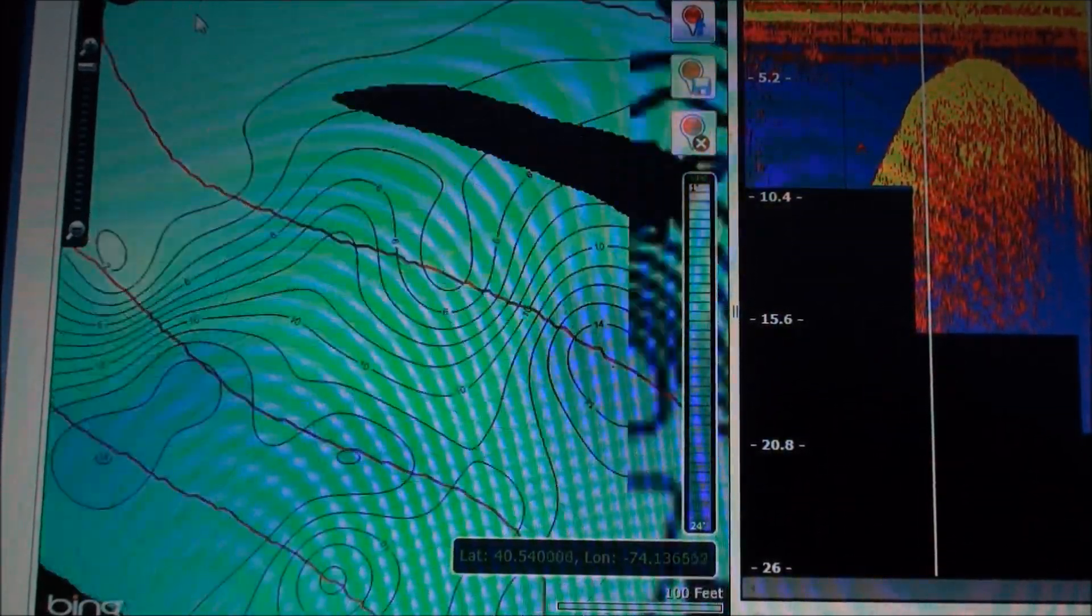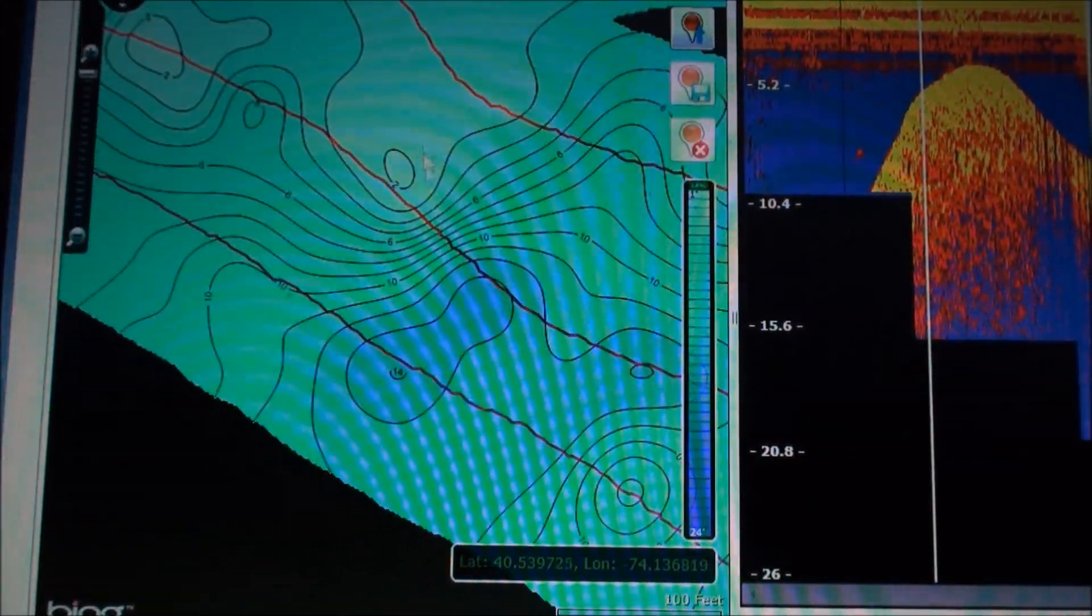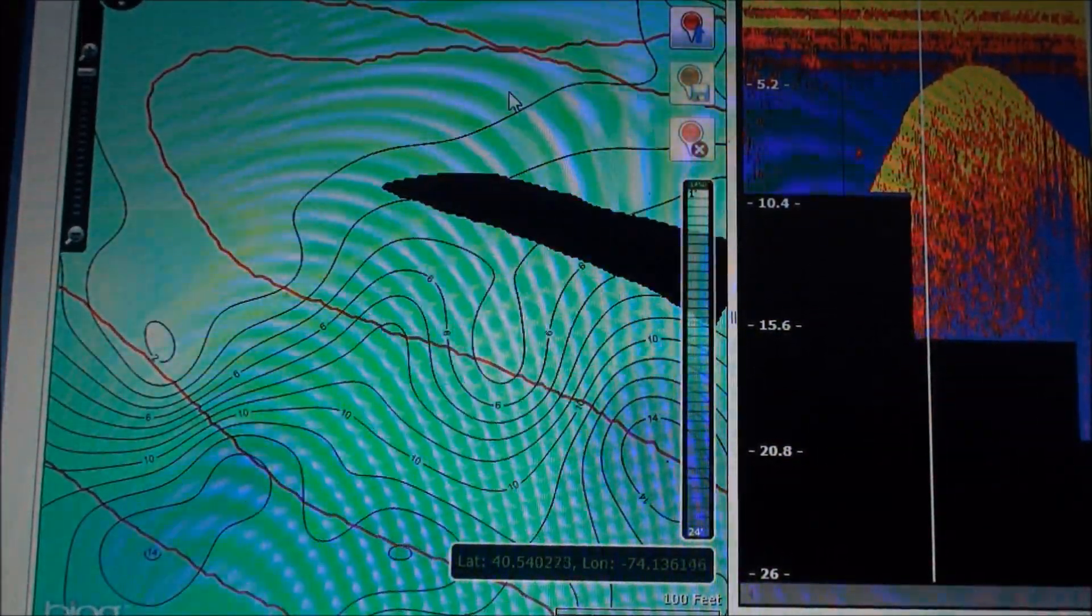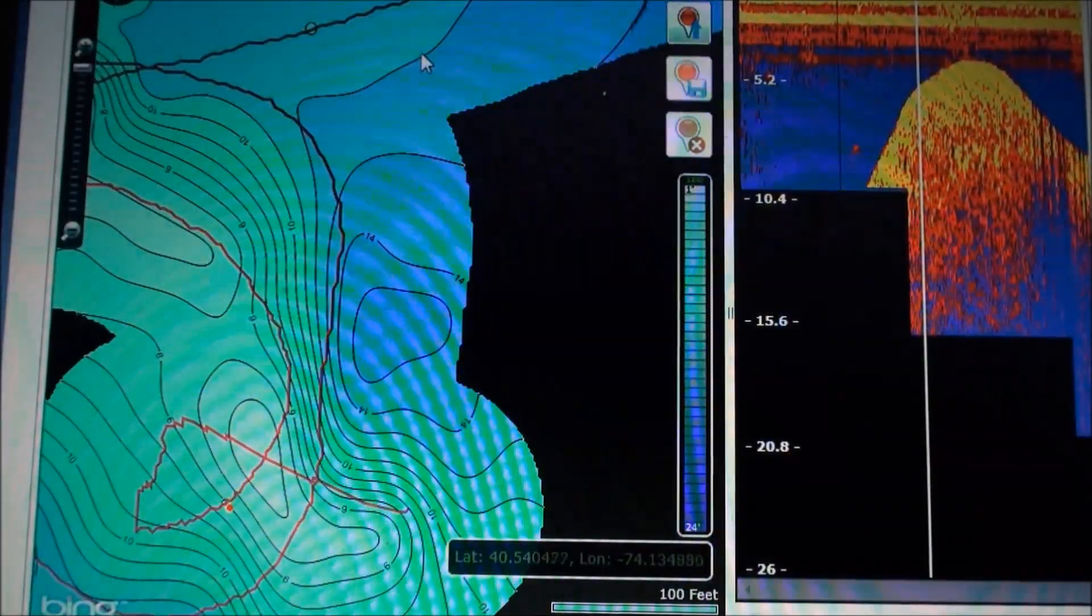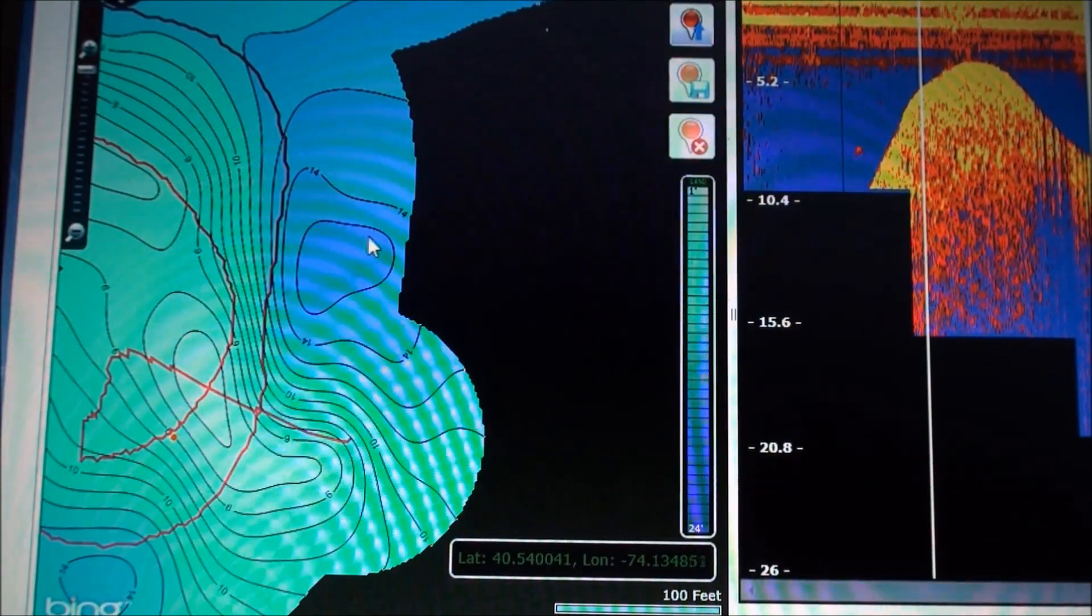This is going to be the most accurate map you will ever have on your boat, and it's free. You record it yourself. You upload it yourself. The only thing you have to pay for is a membership to Insight Genesis, which is very cheap, very cheap considering what you pay for C-MAP or Navionics cards.